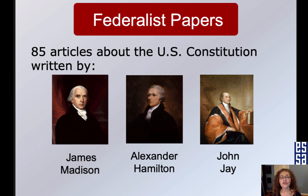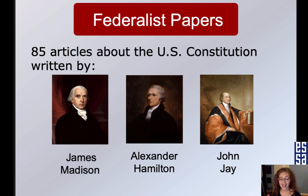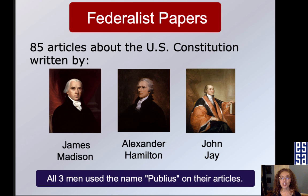The Federalist Papers were 85 articles written for New York newspapers explaining to the people why the states should ratify the Constitution. They wanted everyone to vote yes. These papers were also used to convince people in other states to support the Constitution. Today, people still read the Federalist Papers to understand the Constitution. They were written by James Madison, Alexander Hamilton, and John Jay.